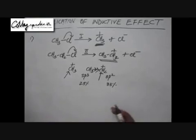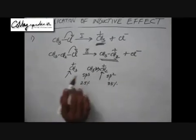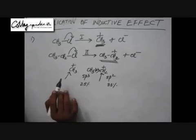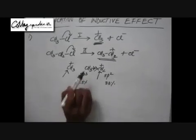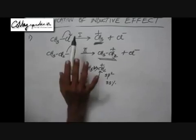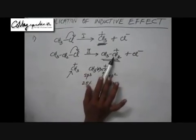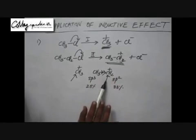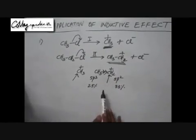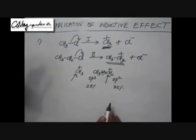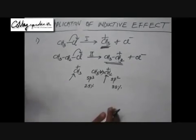So we can conclude that the ethyl carbocation intermediate is more stable than the methyl carbocation. The immediate conclusion is that the second reaction will have a higher rate than the first reaction, because the intermediate formed in the second reaction is more stable. This is one application of the inductive effect — looking at the stability of intermediates, since a more stable intermediate leads to a higher rate of reaction.